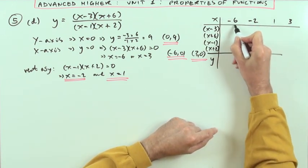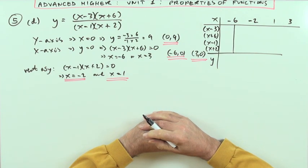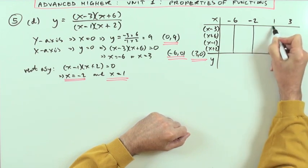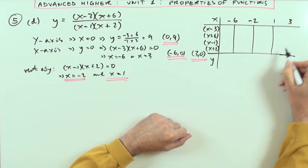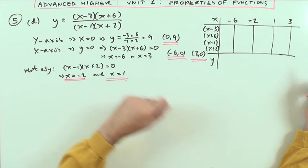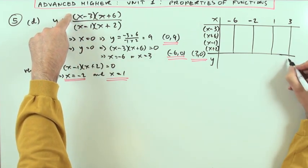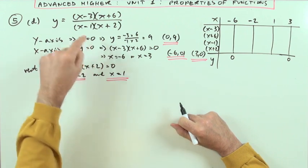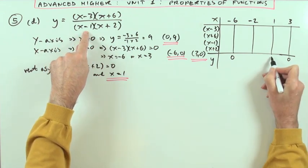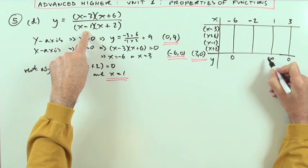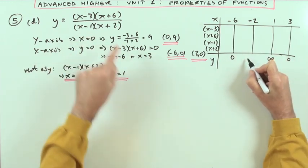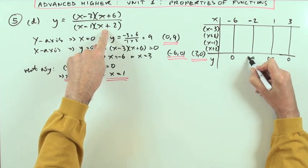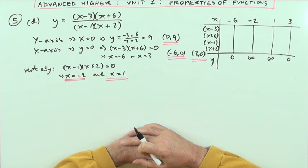I'll draw a line down from negative six — at negative six something happens, at negative two a switch occurs, at one a switch occurs, and at three a switch occurs. At three and negative six, they're top numbers so the answer is zero. At x equals one and x equals negative two, the denominator is zero so the answer is not defined — I'll write infinity there.